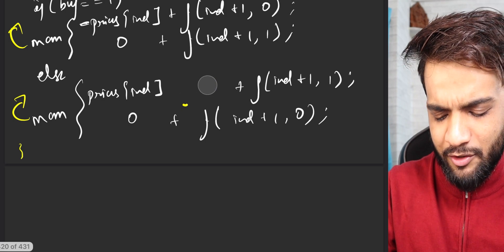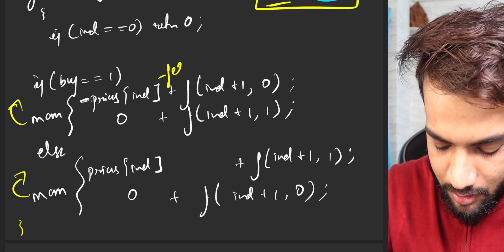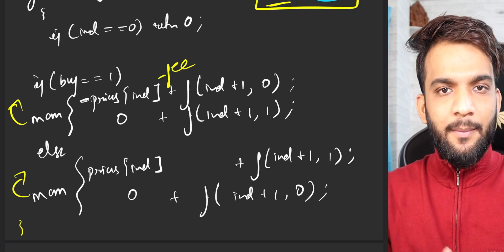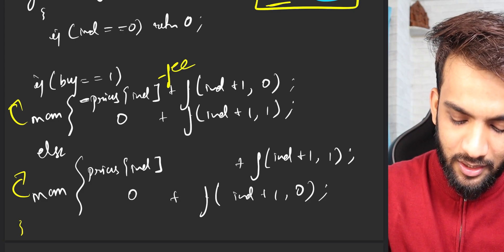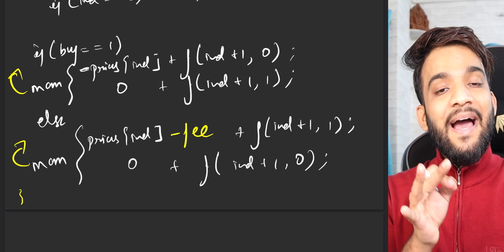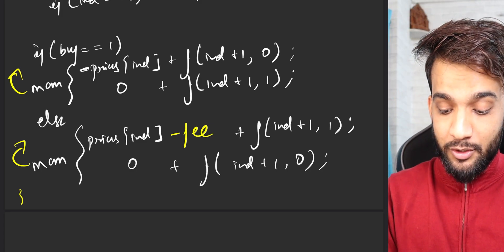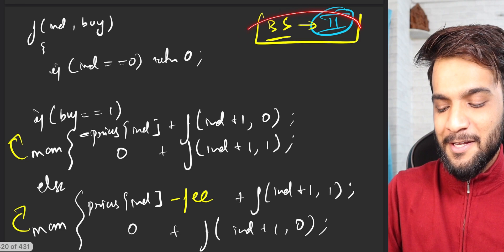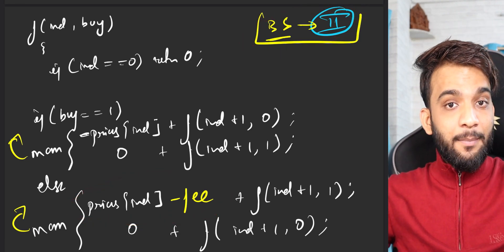Or you can be like, I'm not interested to pay it after conducting sell. I will pay it right when I buy because up front, I'll be like, whenever I start a transaction of buy, I'll pay it right up front. I don't want to keep tension. You can either pay it up front or you can pay it after completing the transaction. Both are okay. As long as you're paying it once on a buy and sell, it should be absolutely okay. So we have figured out that this is the slight change in the buy and sell code that we have to do. Prices of index minus fee and we will be able to do this problem.